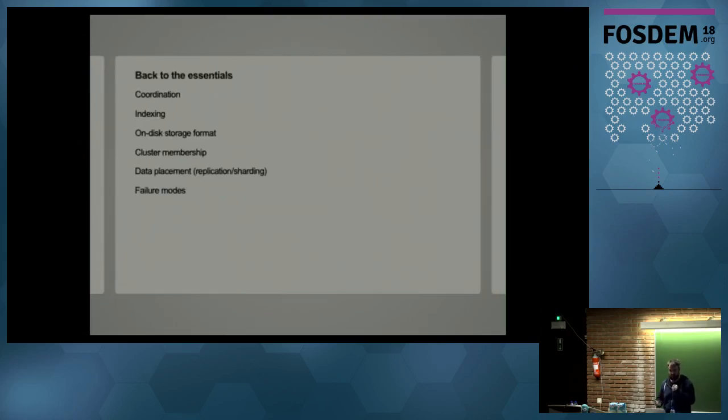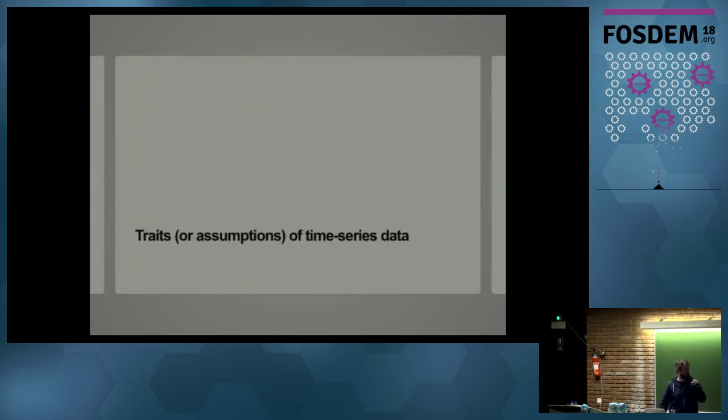So back to the essentials. So what did I need to think about for the system to work? Well, the servers need to be able to talk to each other. They need to coordinate. Peter Borgon wrote a blog post about his system for ingesting logs called OKLog. And that was really influential to me in terms of framing the problem in terms of coordination between servers. And then indexing. How do you know where your data is stored in the system? How do you store the data on disk? How do you know which nodes should be in the cluster? And when you know which nodes should be in the cluster, how do you decide where to send the data between them? And then finally, how will the system fail? Because it will fail at some point.